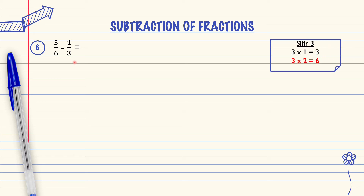In the 3 times table, there is number 6 in the answer. So this means number 3 will be multiplied by 2 to become number 6.